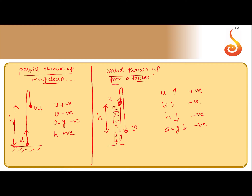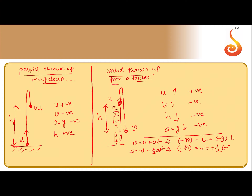How do I write the equations of motion here? The first equation of motion v = u + at is written as −v = u + (−g)t. The second equation s = ut + ½at² is written as −h = ut + ½(−g)t². The third equation v² = u² + 2as becomes v² = u² + 2(−g)(−h). This is how you use the sign convention while dealing with motion under gravity.